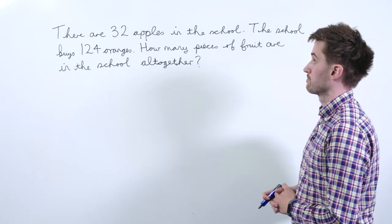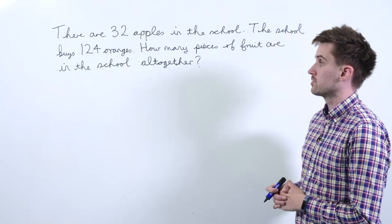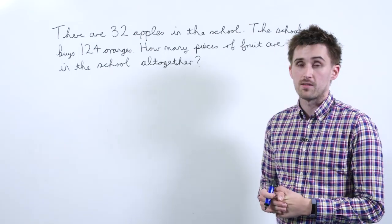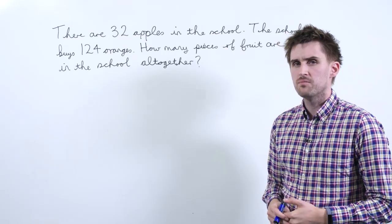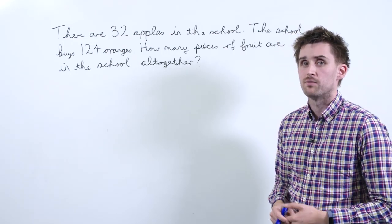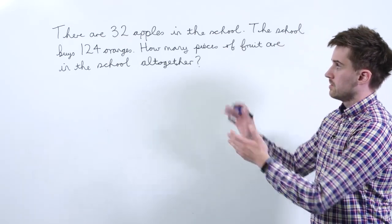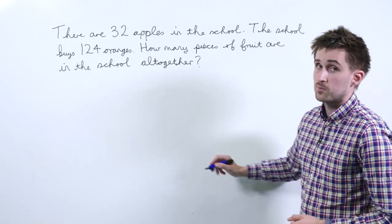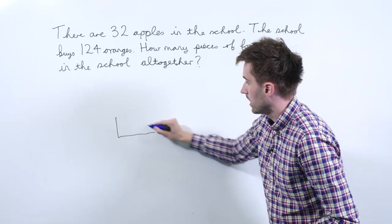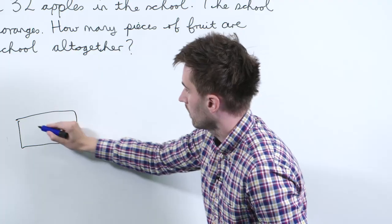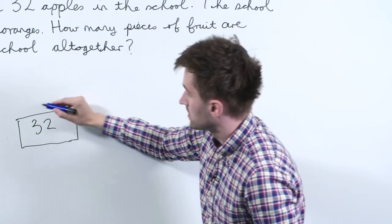124 oranges. How many pieces of fruit are in the school altogether? Now you want to ask the pupils what information do we have first. They may point out that we have 32 apples, and we can label this